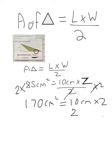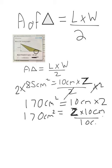It's important to show how to solve it algebraically. To isolate z, first multiply both sides by 2 — the ÷2 cancels out — giving 170 centimeters squared equals 10 centimeters times z. Then divide both sides by 10 centimeters. 170 divided by 10 is 17. For the units: centimeters squared divided by centimeters removes one power, leaving centimeters. So z equals 17 centimeters.